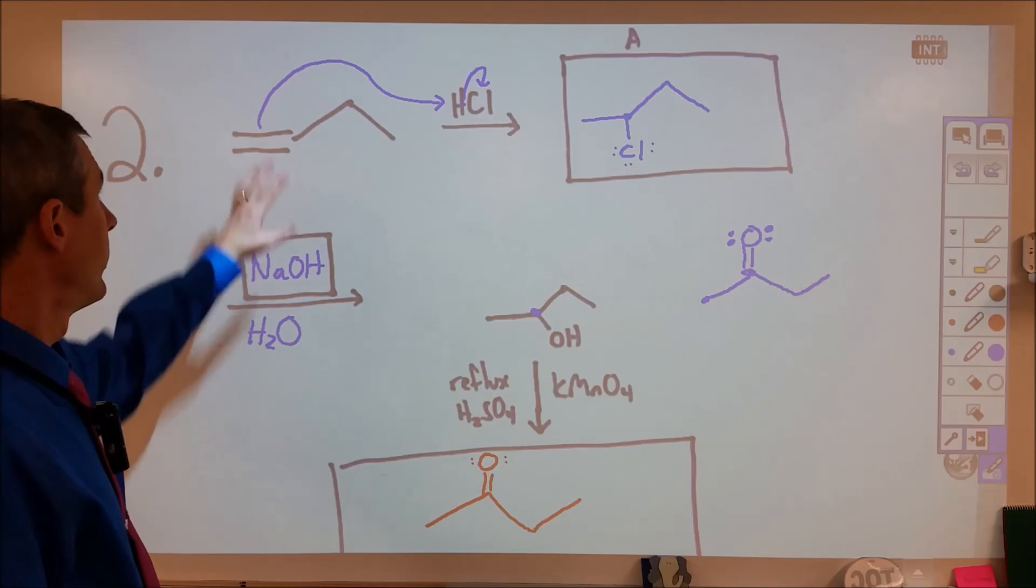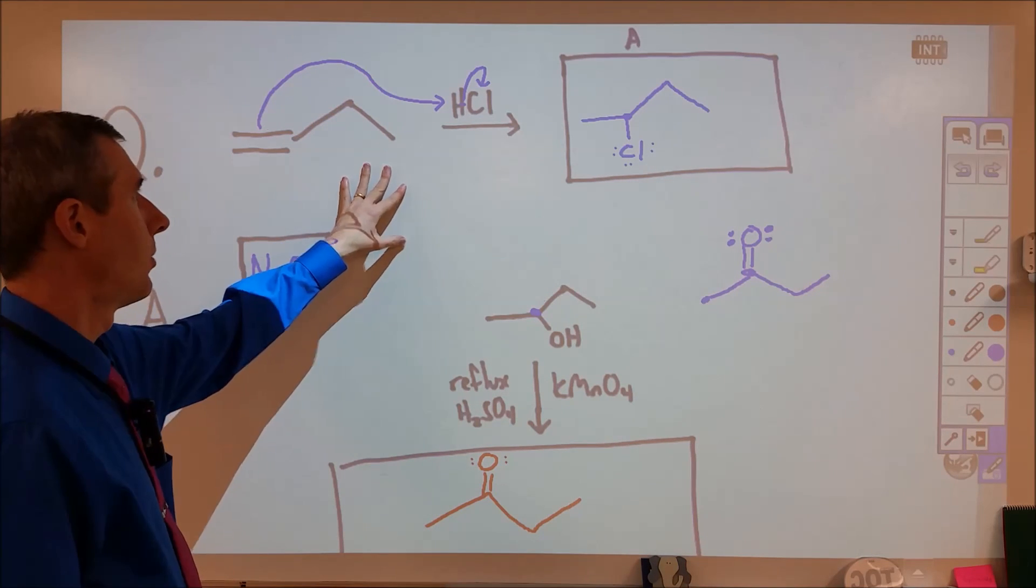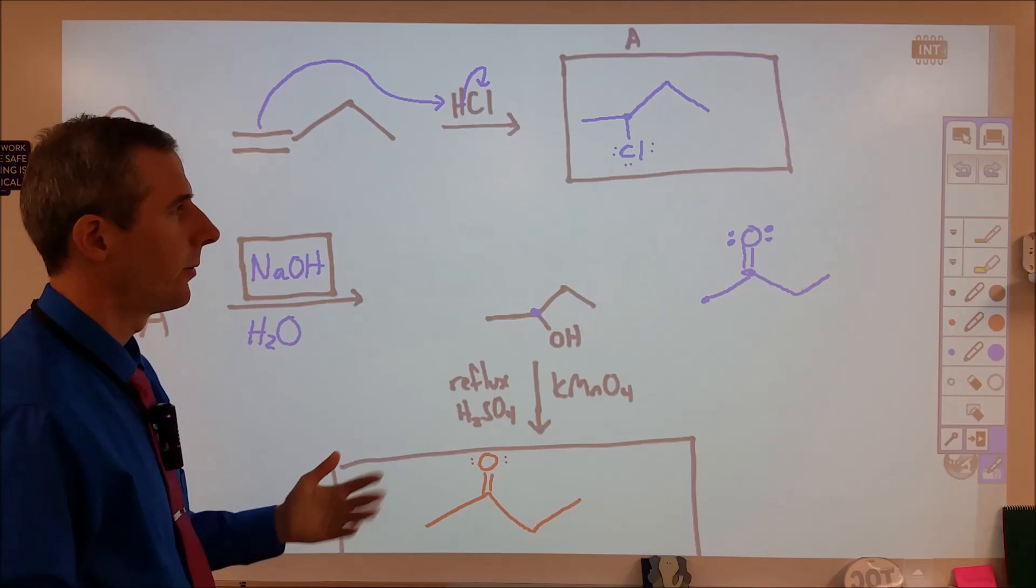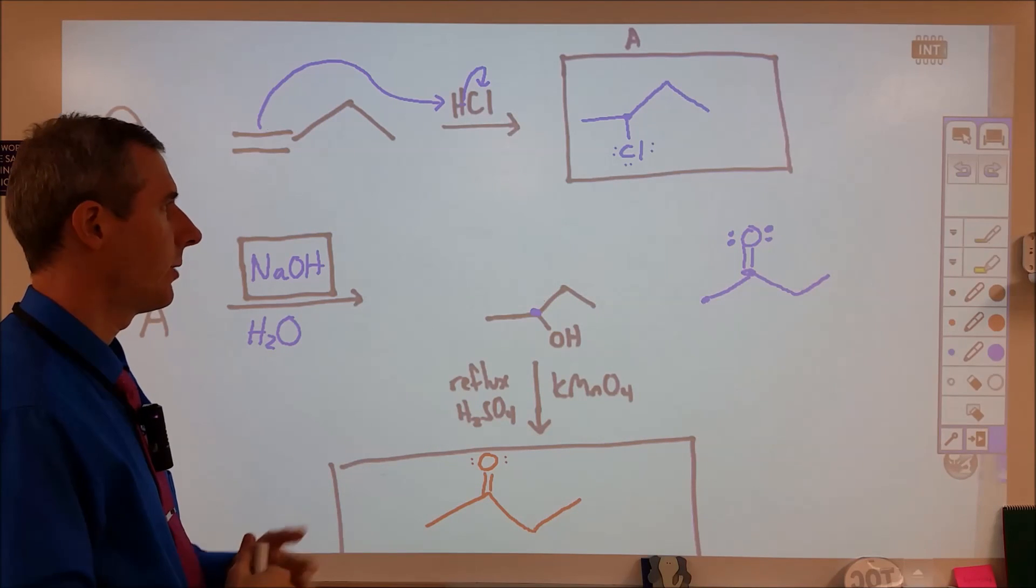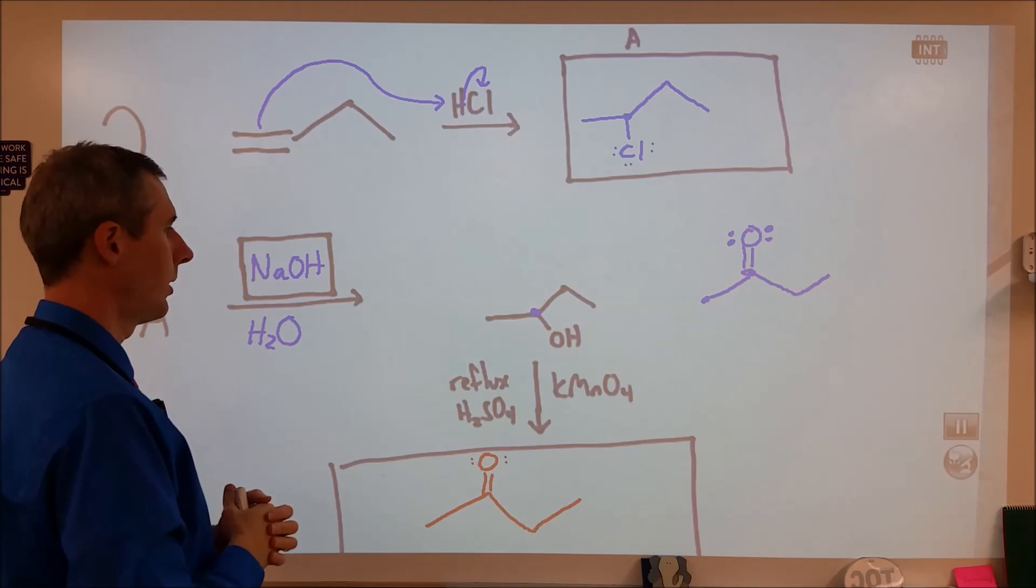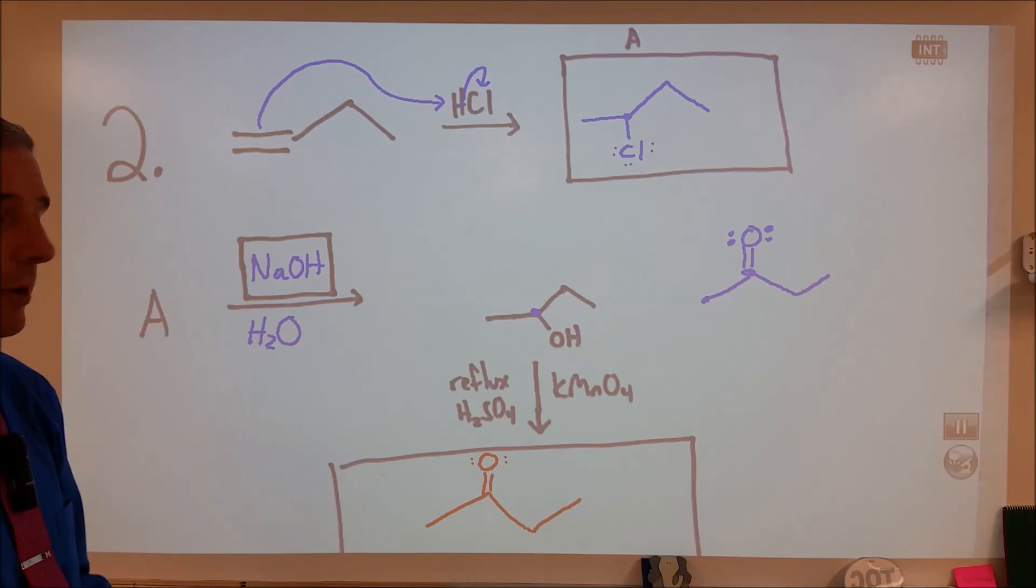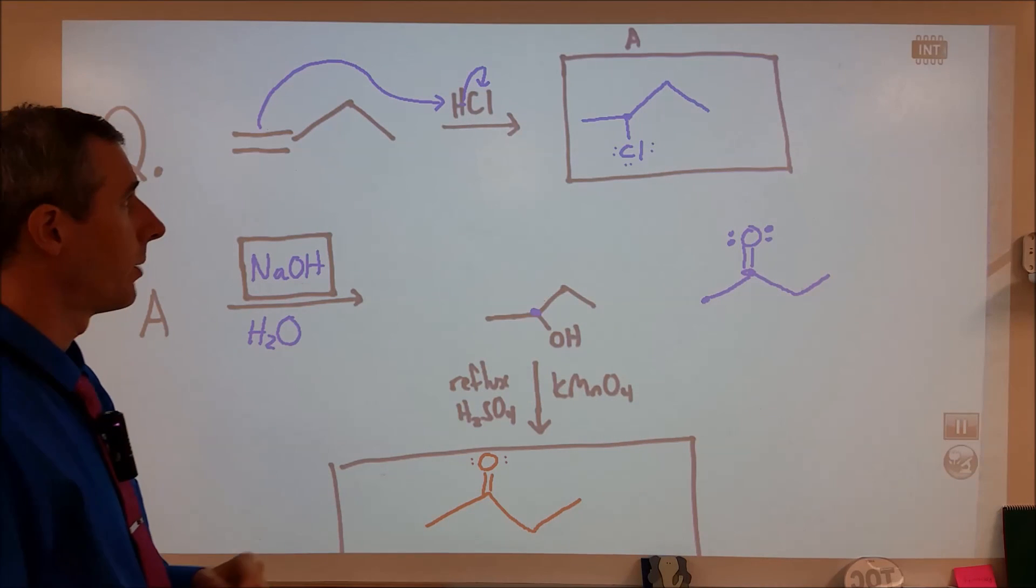So again, we're going through and just picking out what reactions do we see potential for? What will we form for that? We're not really getting into any stereochemistry here, which is nice. It makes it a little simpler. We're looking at what do we have at our disposal and how can we use that to get from point A to point B.